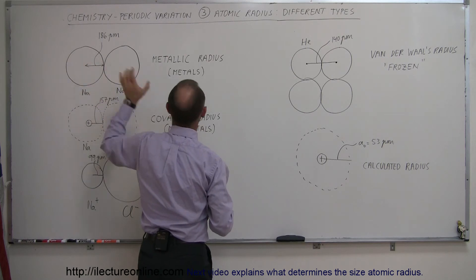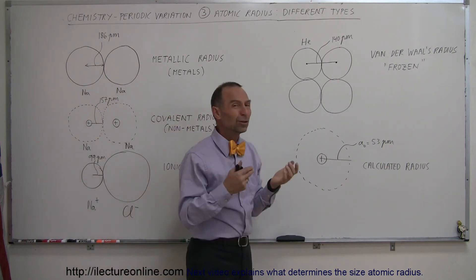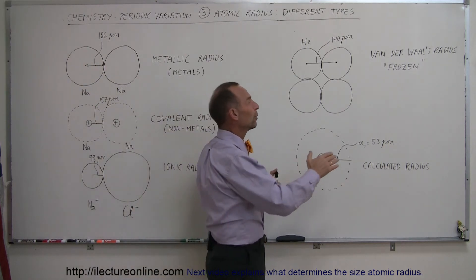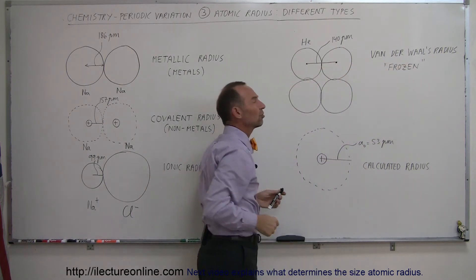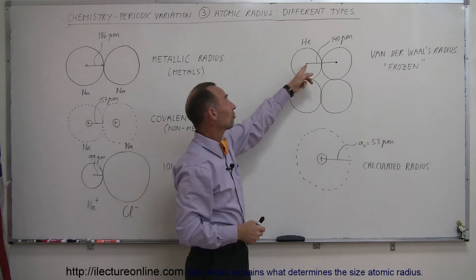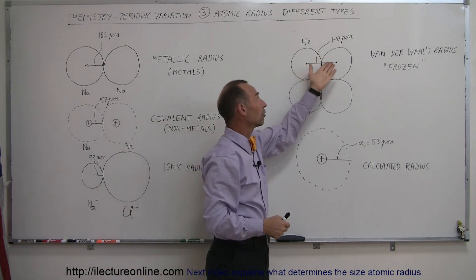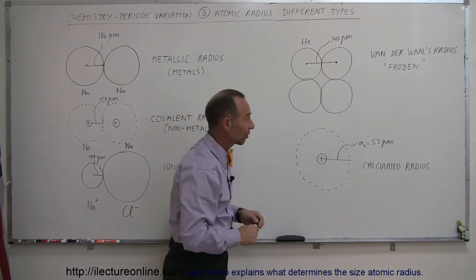Pretty well the way we do it for metallic radius. But we can only do that by making it really, really cold. So we call that the frozen state of the gas to the point where you can actually measure the diameter. Turns out the distance from nucleus to nucleus of helium in a frozen state is 140 picometers, for example.